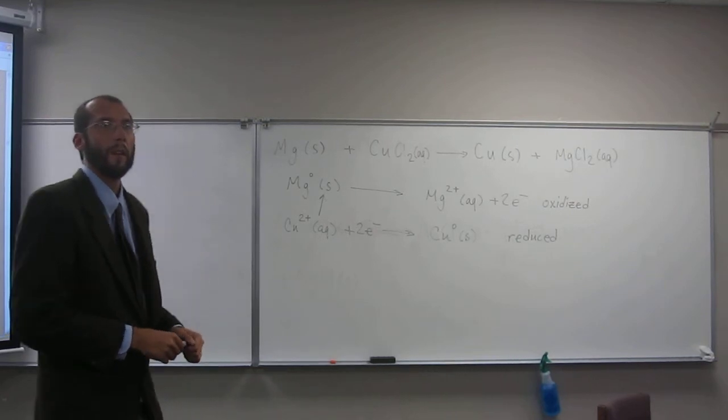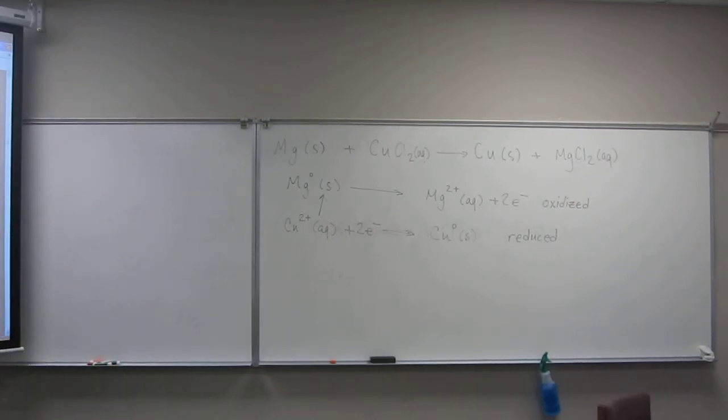What if it went from zero to a negative two? That's still being reduced, right? Zero to a negative two, yeah, it's still being reduced. So if the number gets lower, that's reducing the number, right? Is everybody okay with that? Any questions on reducing and oxidizing agents? Okay. Good question.